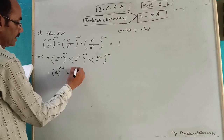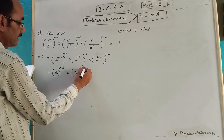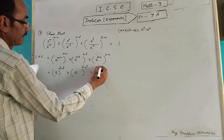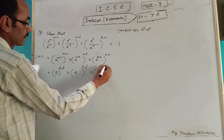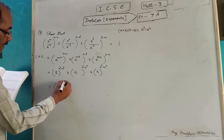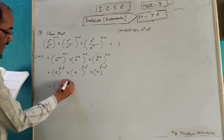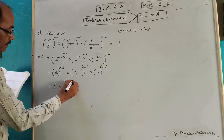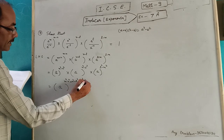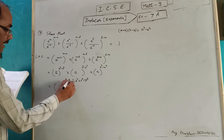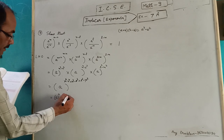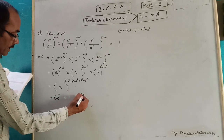Then a^(n² - l²) into a^(l² - m²). After multiplying, a has power m² - n² + n² - l² + l² - m². All terms cancel: m² - m², n² - n², l² - l², giving a^0 = 1 = right hand side.